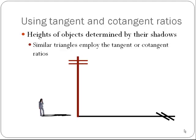Tangent and cotangent ratios are used to determine the heights of objects that are unknown but where we can measure the shadow. For example, if we want to know how tall a utility pole is, we can measure the length of its shadow, and at the same time measure the length of a person's shadow and the height of the person. By drawing in hypotenuses to create imaginary triangles, and since the sun strikes both at the same angle and both are standing upright, we get two similar right triangles by angle-angle similarity, and we use these tangent or cotangent ratios to determine the height of the utility pole.